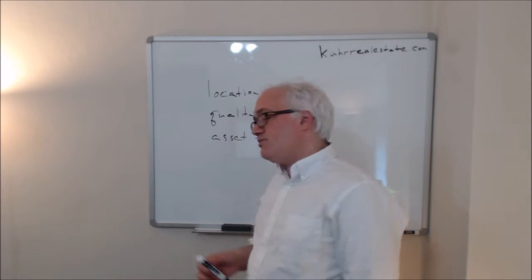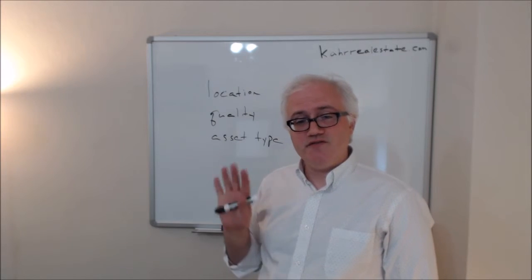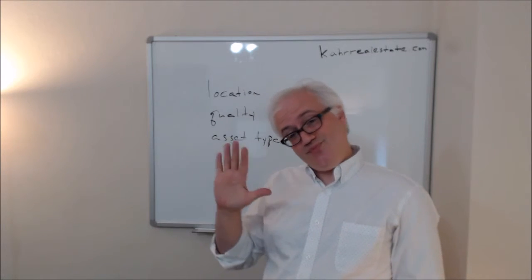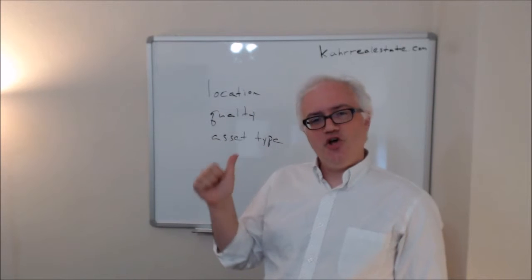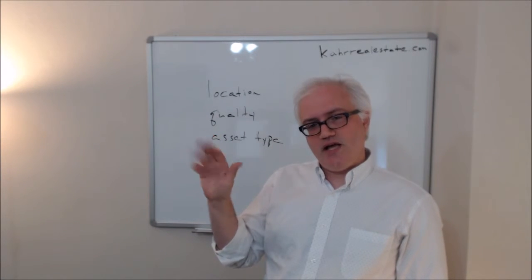Finally, asset type. If we think about that, there are essentially five major product types: office, retail, industrial, residential, hotel.